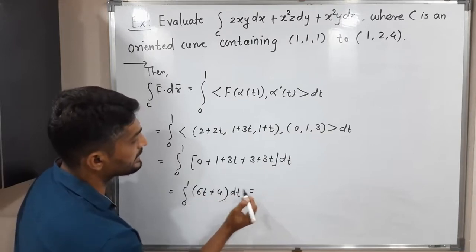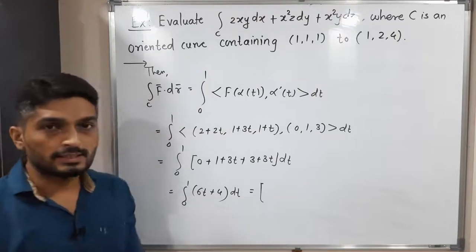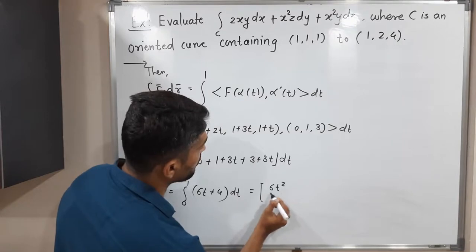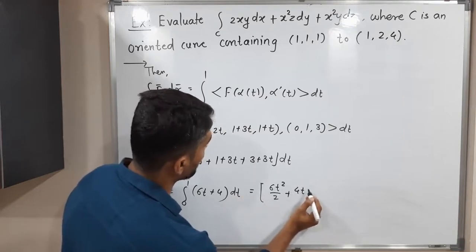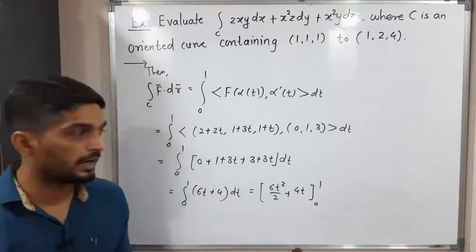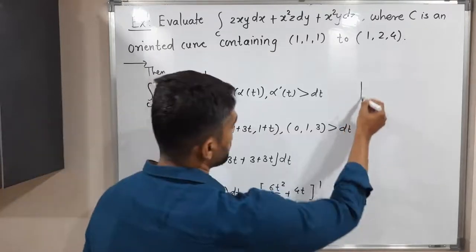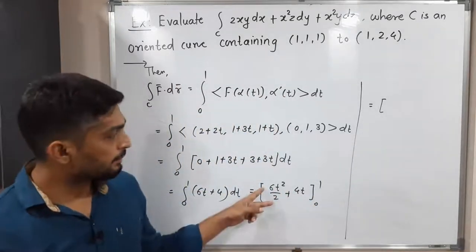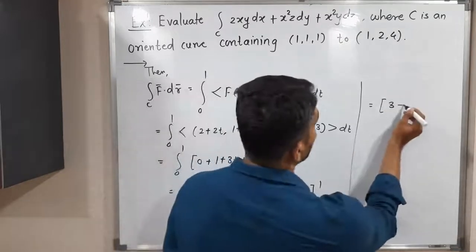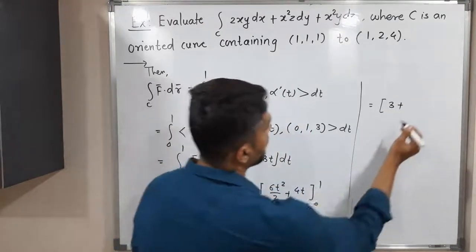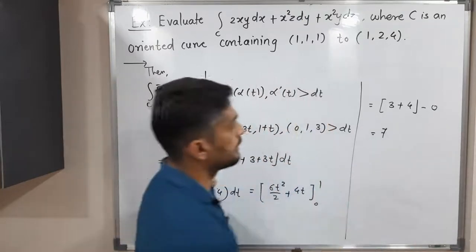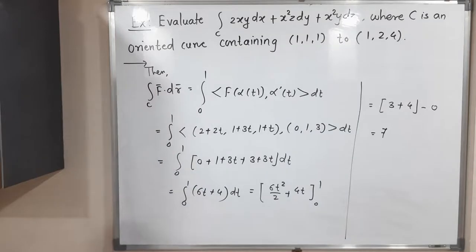So it's very easy to find its integration. Yes, 6 is constant, integration of t will be t²/2. So 6t²/2 plus integration of 4 is 4t with limit 0 to 1. So let us put 1 first. We have some space here, so let us use. So I am putting 1. So 1² is 1, 6/2, so we will have 3 plus if I put 1 here, we will have 4. If I put 0, both terms will give us 0 value. So this is 7, which is the required answer. So yes, example is over. Make a screenshot of it. Then we'll stop. Thank you. Bye-bye.